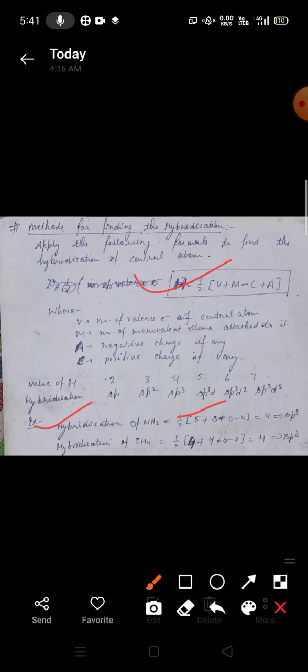When we calculate this, it will be 4, and 4 stands for sp³ hybridization. Hence in NH₃, the hybridization of central metal atom will be sp³. Like NH₃, for CH₄ molecule, the value of H will be 1/2 × (4 + 4 - 0 + 0). Carbon has 4 valence electrons and there are 4 hydrogen atoms. There is no cation or anion, so the value will be 4, and that's why the hybridization in CH₄ is sp³. You can calculate the hybridization of central metal atom by using this formula.